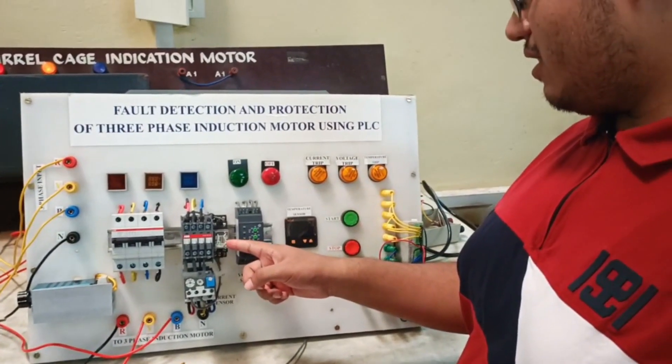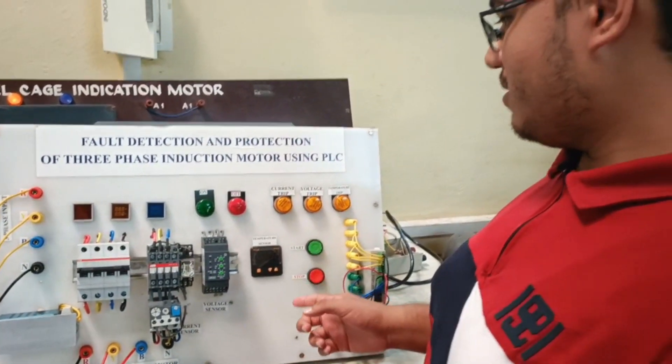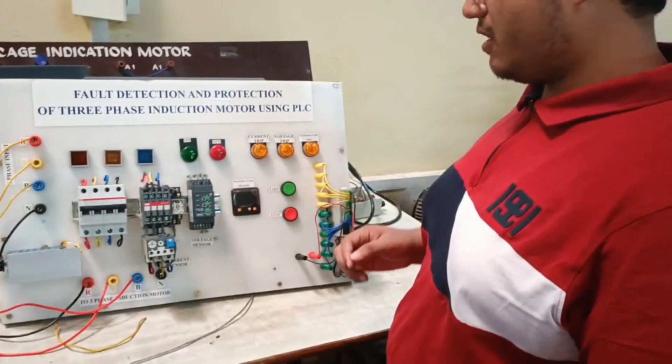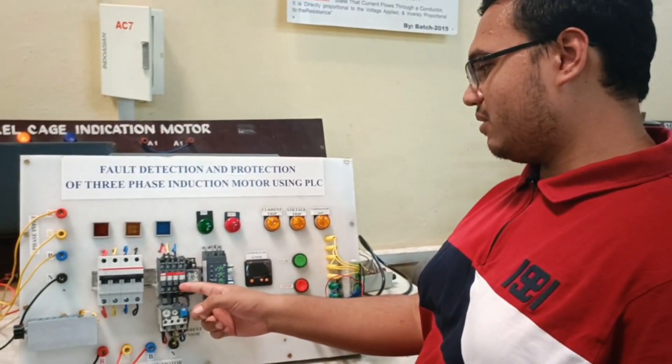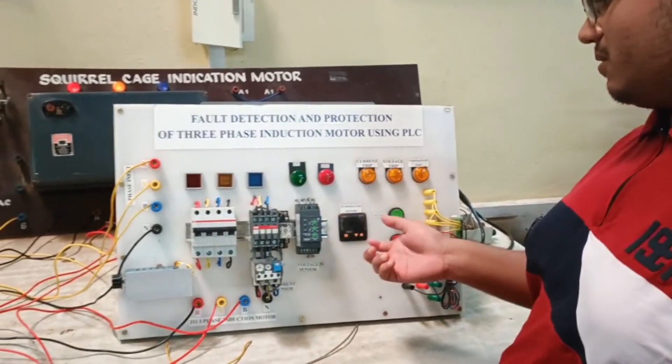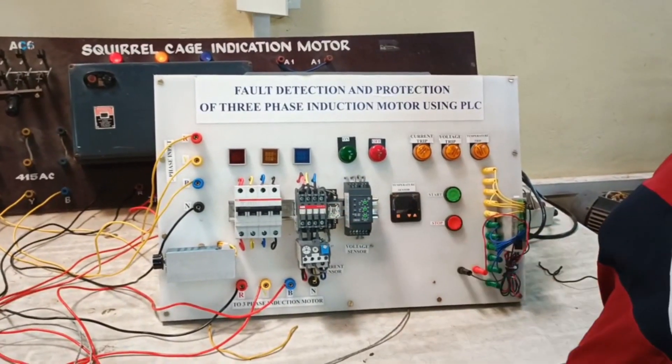This component is an auxiliary relay which we are using because this PLC runs on 24 volt while this contactor runs on 220 volt. Hence to fix the voltage we use this auxiliary relay.